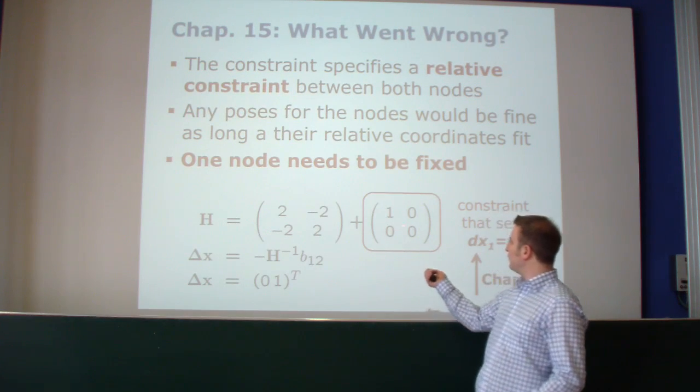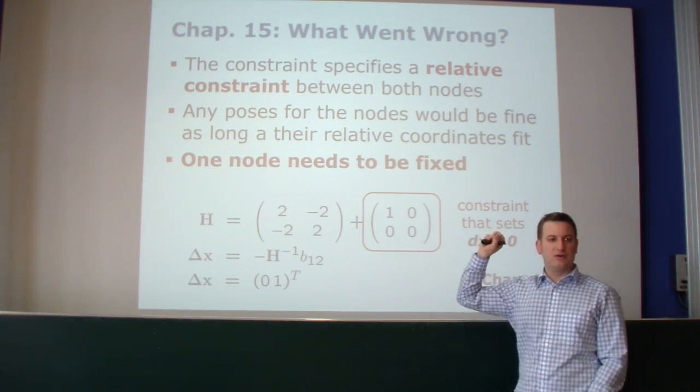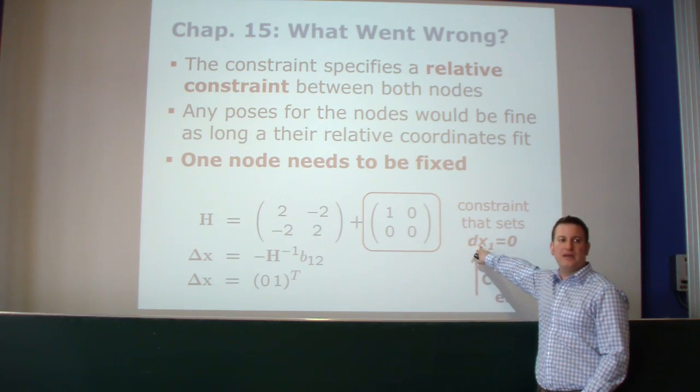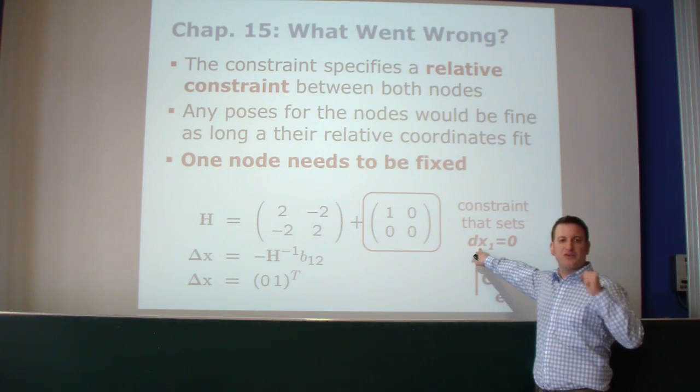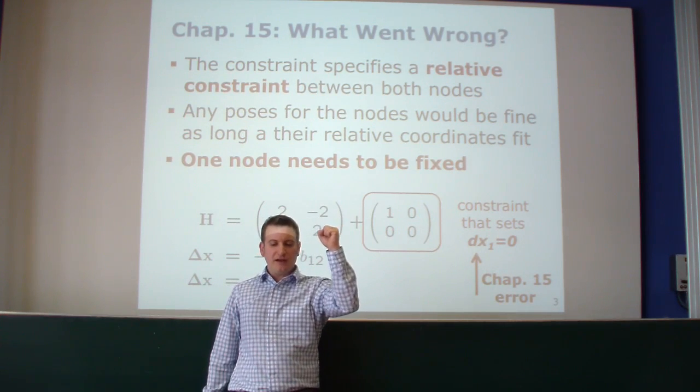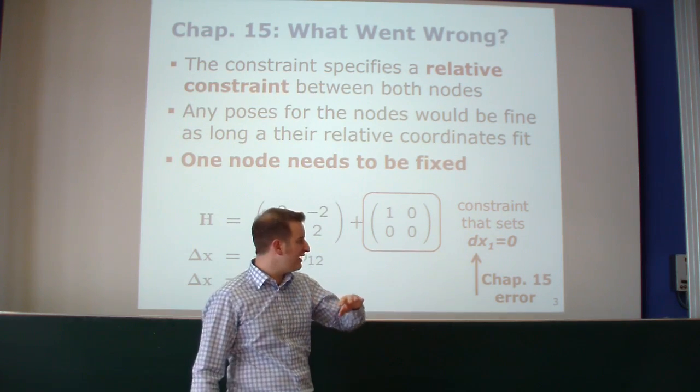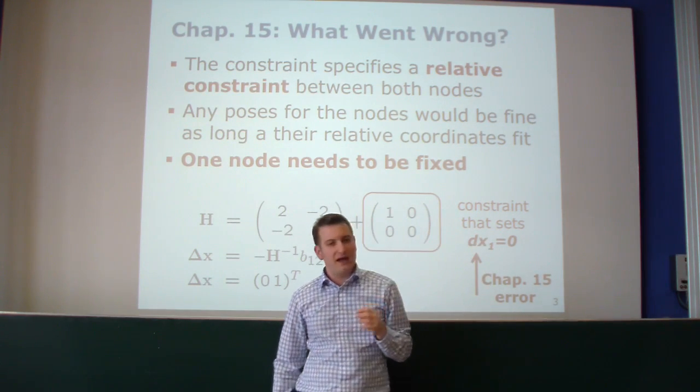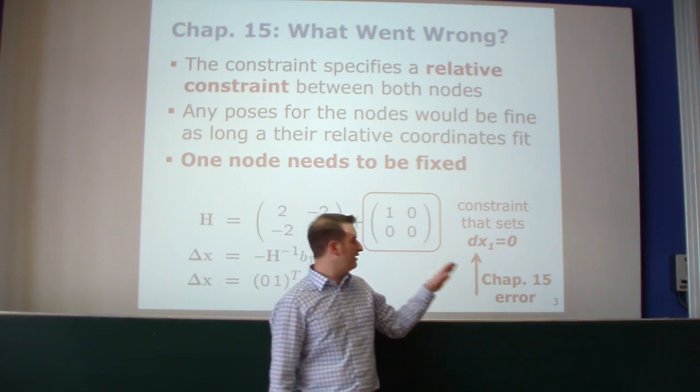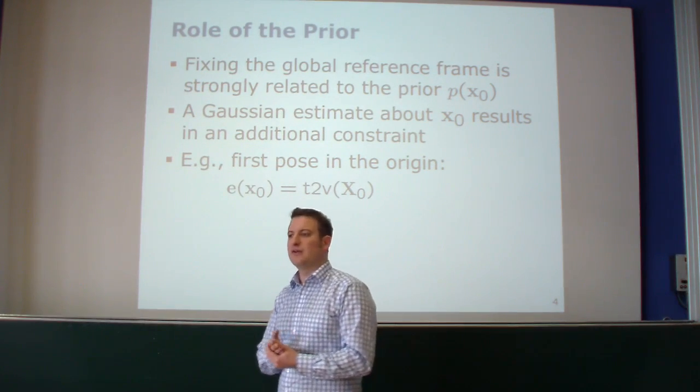The first thing was that we had that issue when we did the small example with the two nodes on the blackboard - if we just had the constraints between those three nodes, the rank of the matrix H is not full, so we cannot solve our linear system. And what I said then is that the reason is because these constraints are all relative constraints between nodes and we haven't fixed a node in the global reference frame. This was correct, there was nothing to object to that.